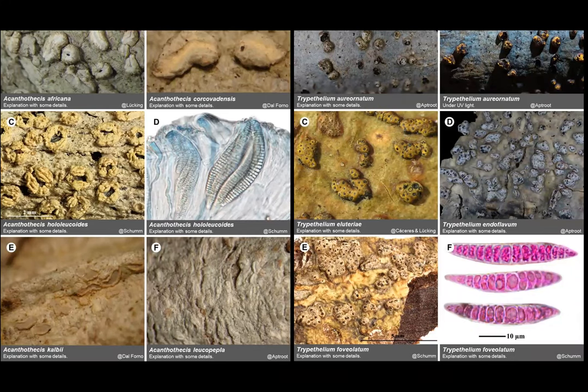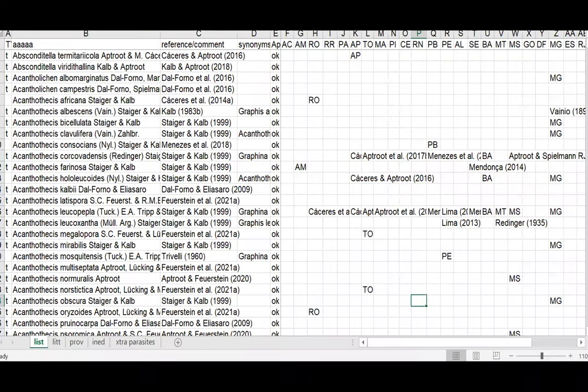The plates look like this — to the left is part of Acanthothecis, to the right Trypetheliaceae. Acanthothecis is a group most common in the Amazon, and Trypetheliaceae is a group most common in the southwest. The checklist will look like this — you can see there are many more Acanthothecis than illustrated, and many of them still have to be published this year to make things complete.